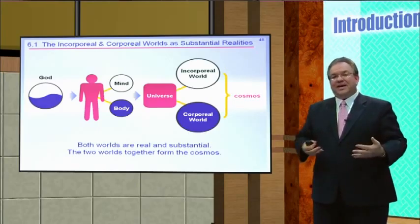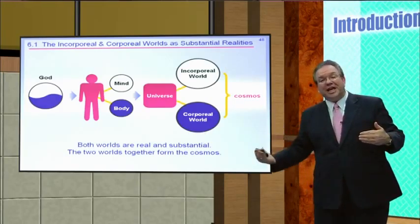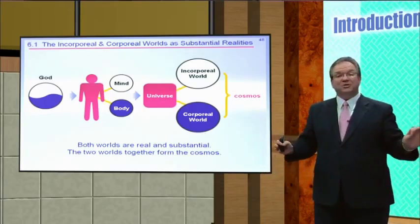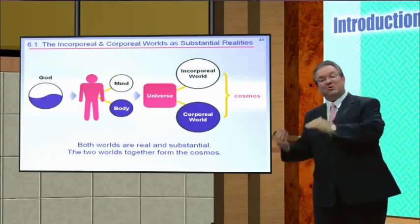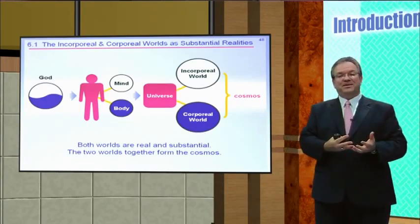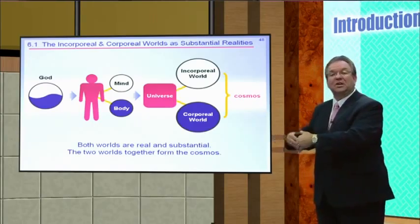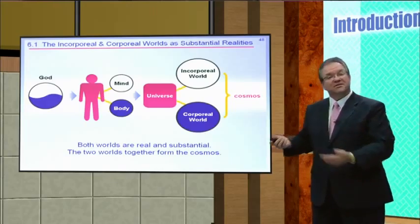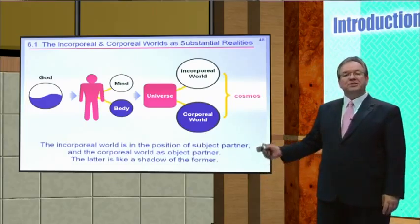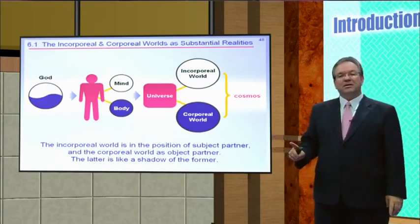In the same way as a human being exists with inner nature and outward shape, every form of life in the universe has inner character and outer form. The universe itself has an inner dimension — the spiritual dimension — and an external expression or form, which is the physical realm. The incorporeal or spiritual world is in the position of subject partner, while the corporeal or physical world is the object partner.